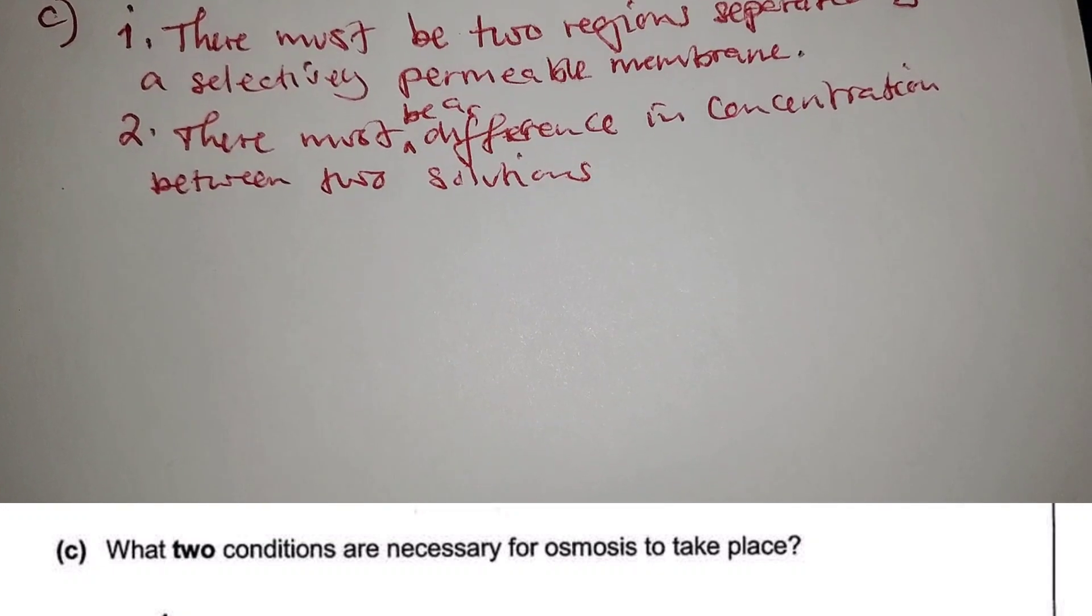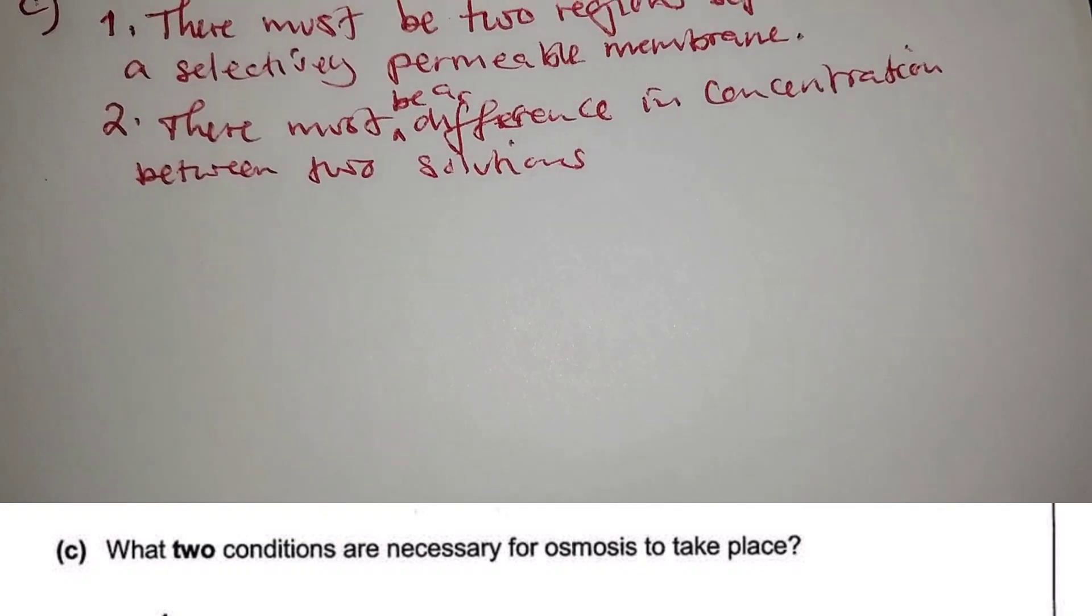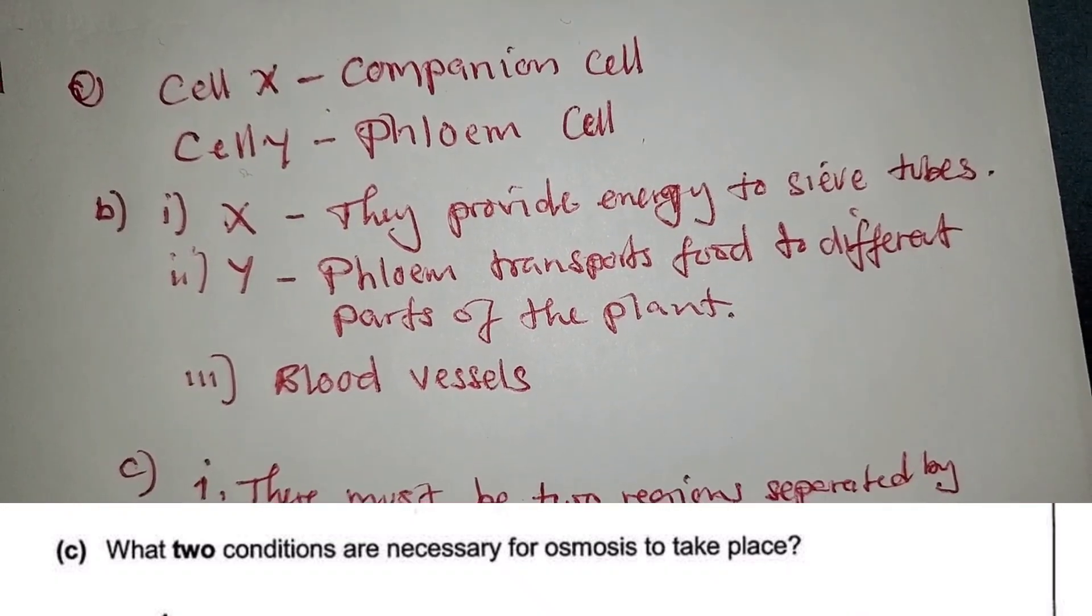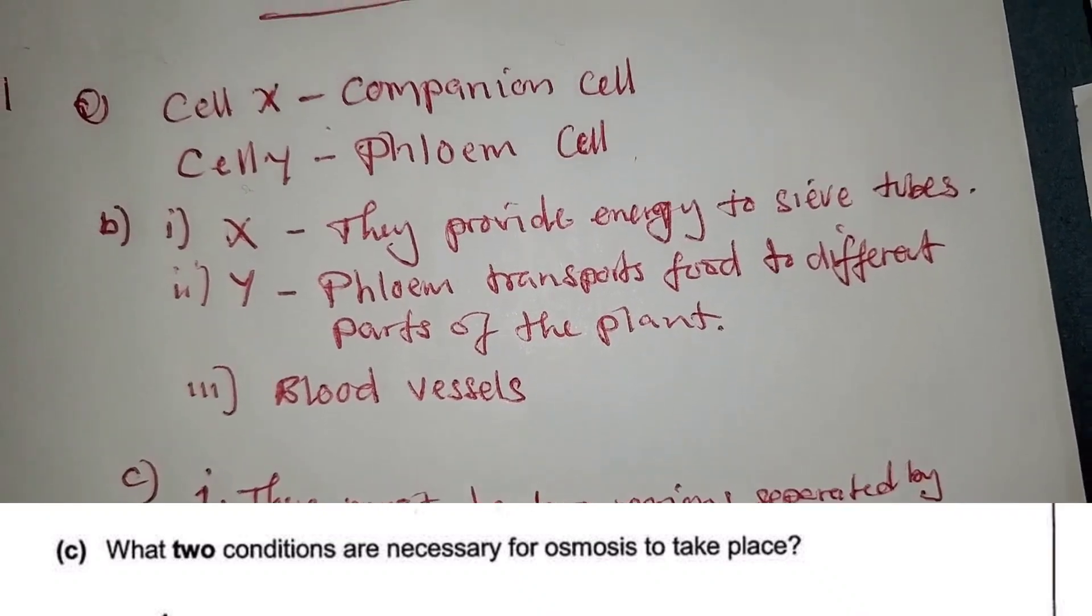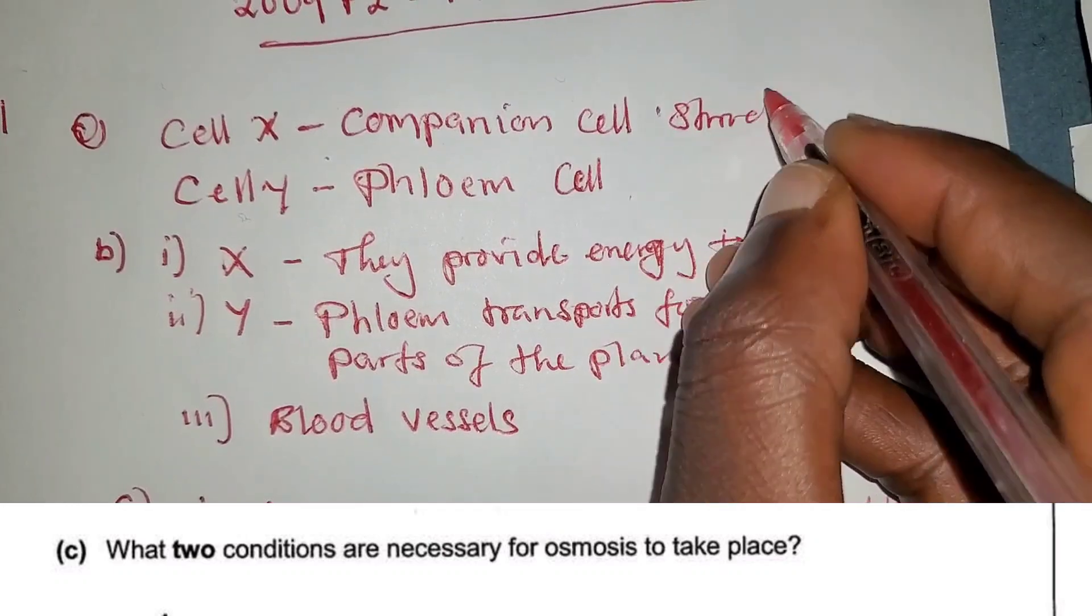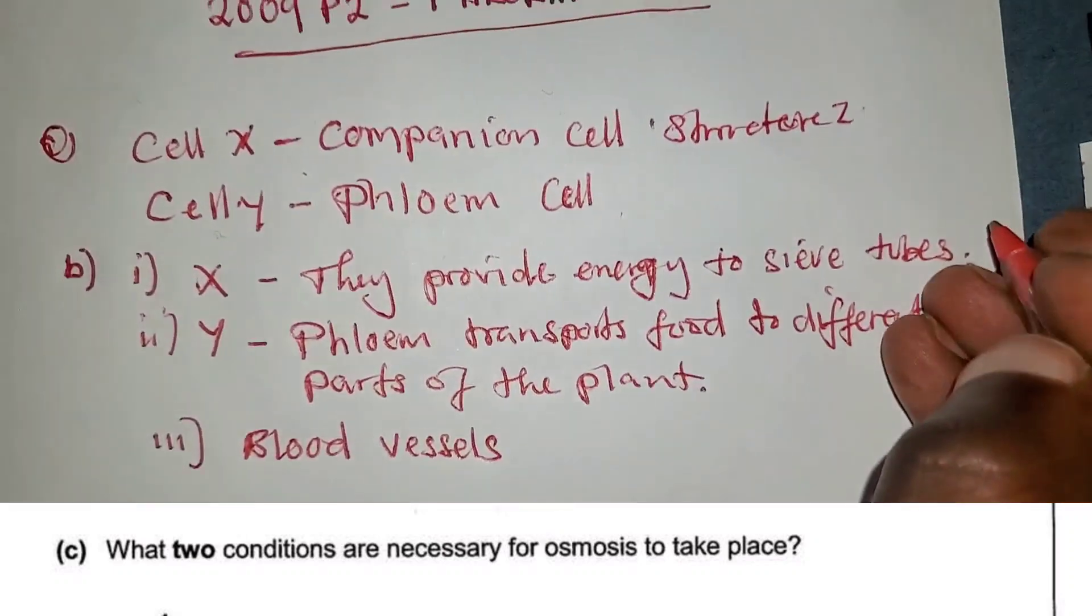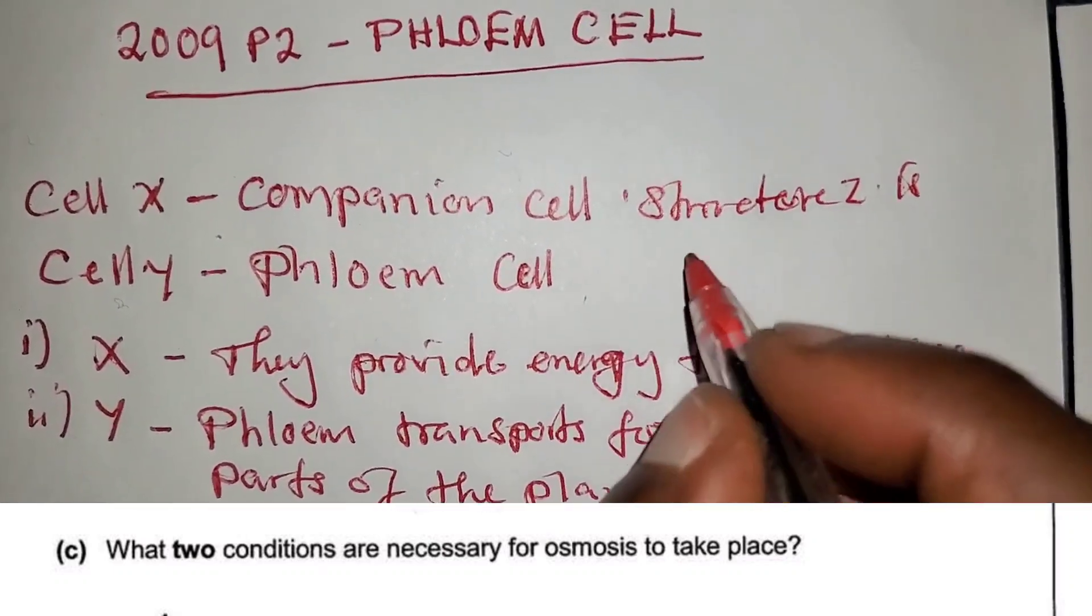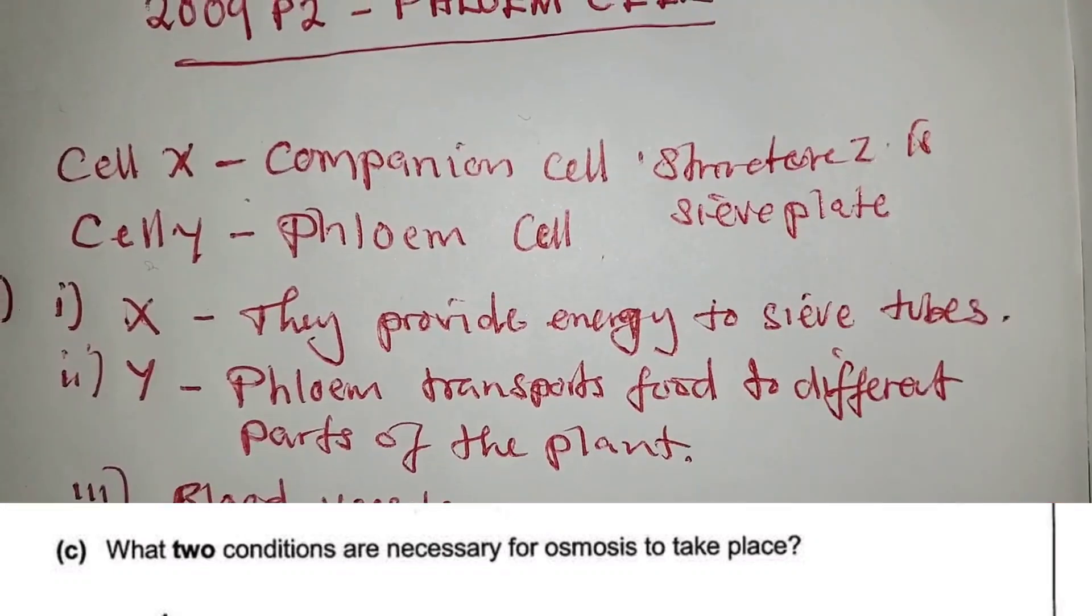That's all to this question. So eight marks in total. Oh sorry, there is another question that I skipped. The question was cell X, cell Y, and structure Z. So structure Z is sieve plate. Structure Z is sieve plate. That's all to this question.